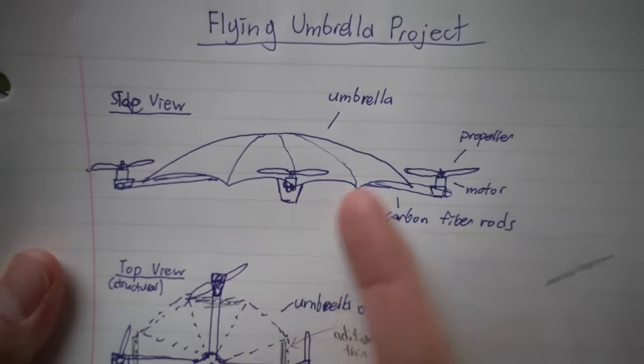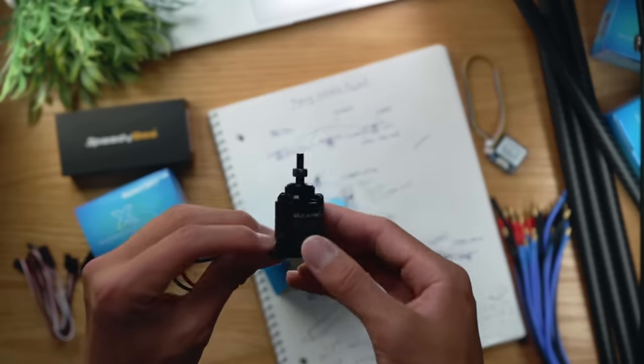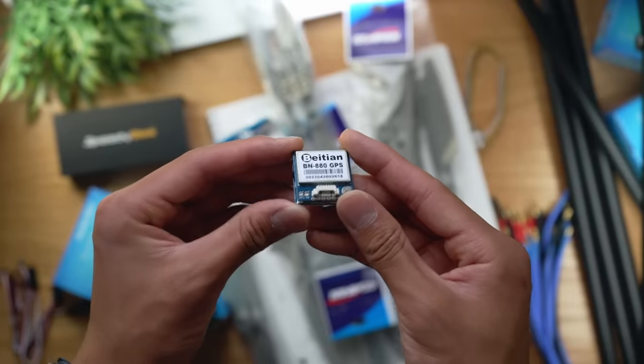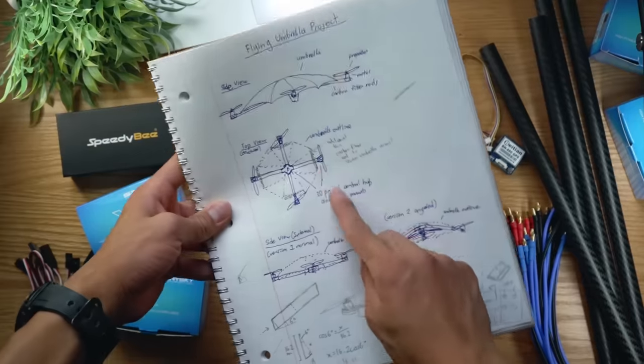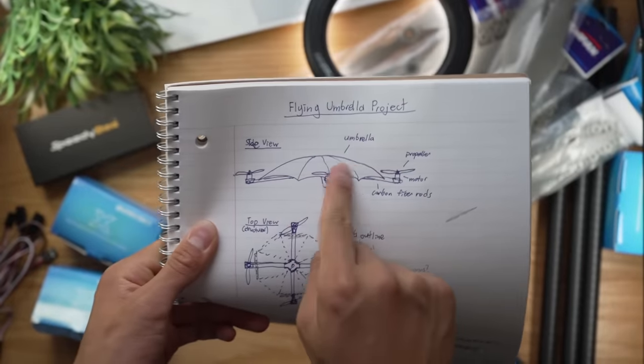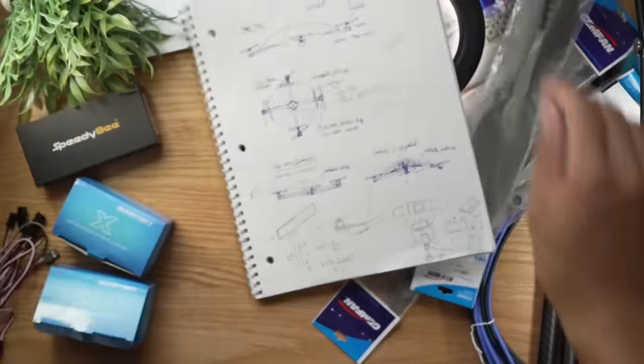The propellers can then be connected to motors and controlled by various electronics, which will help the umbrella stay stabilized while it's in the air. I guess there still is a good chance that this whole project just isn't possible, but I suppose we'll have to find out. Let's first go find an umbrella.